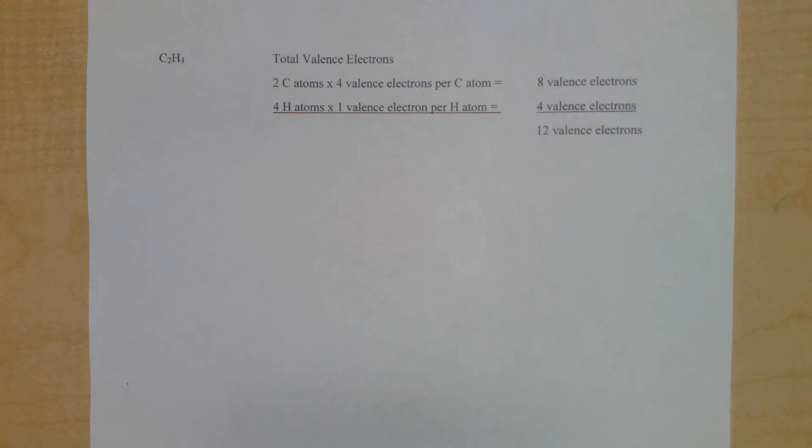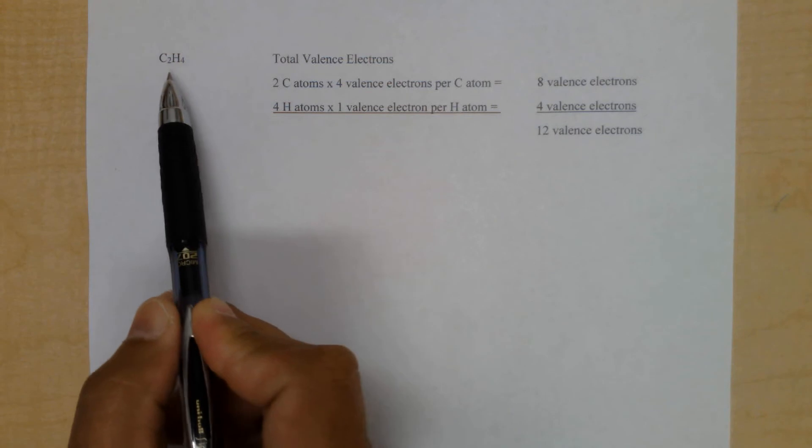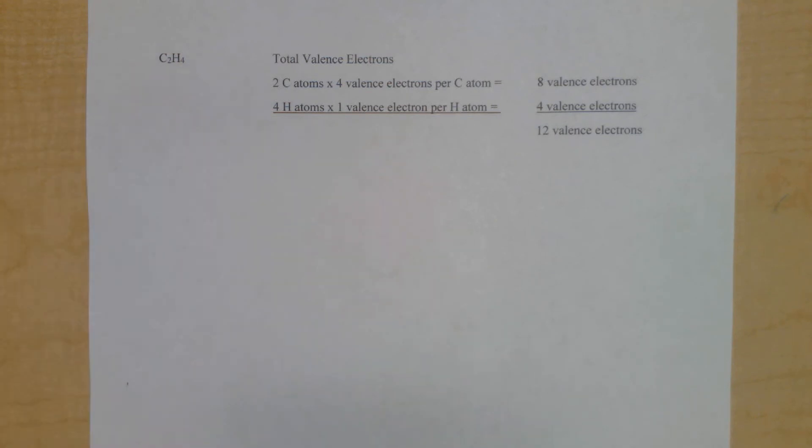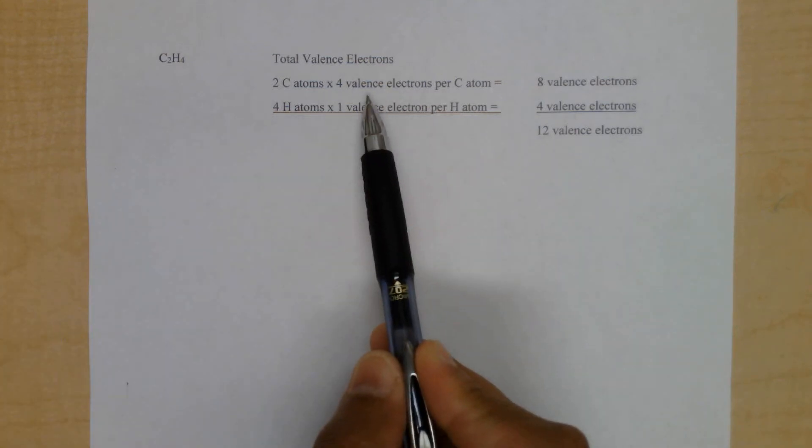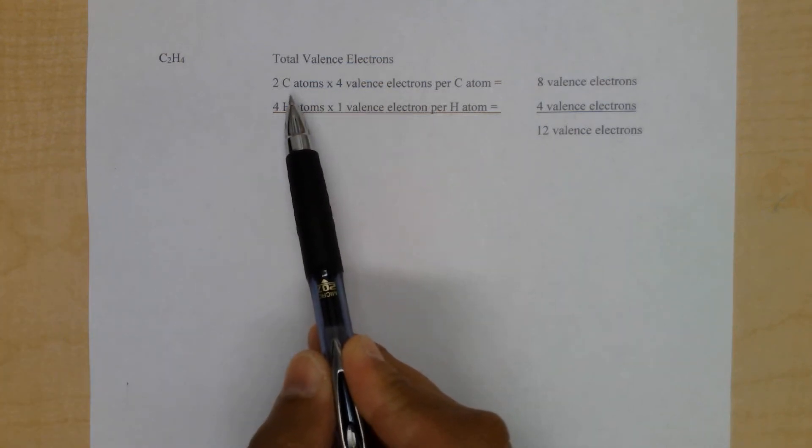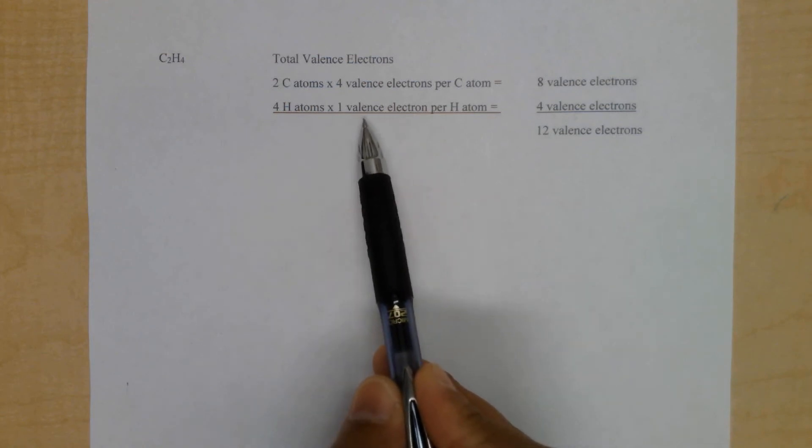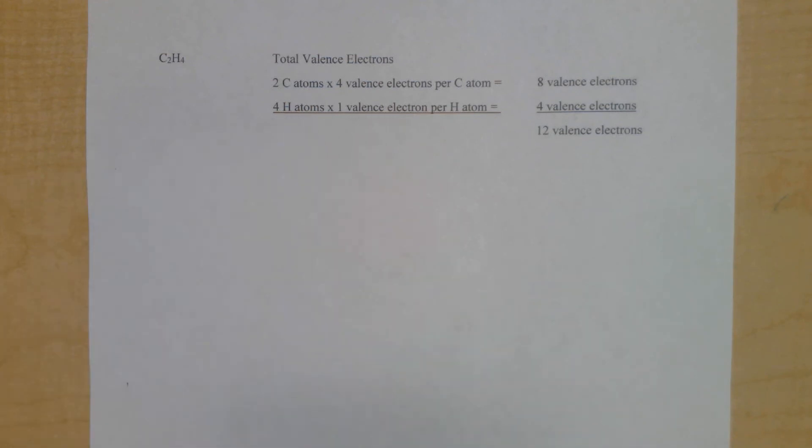Let's look at the Lewis structure for ethene, C2H4. The total valence electrons are 12. These electrons come from 4 valence electrons for each carbon atom and 1 valence electron for each hydrogen atom.